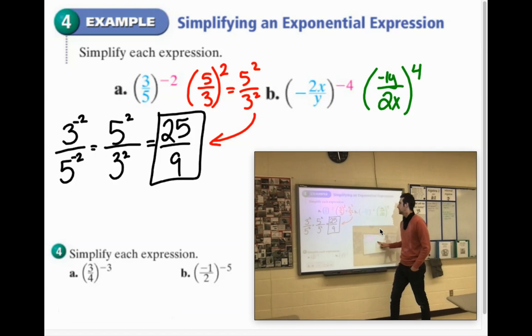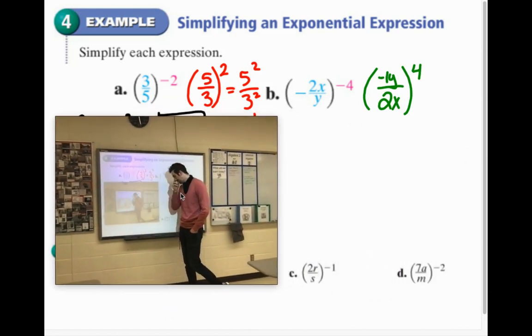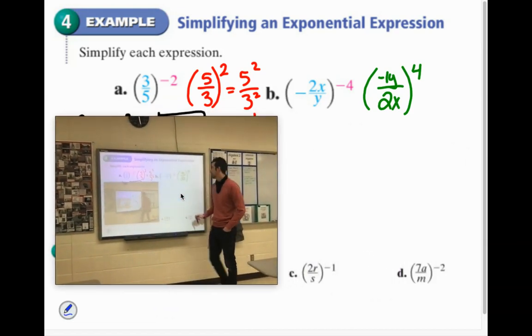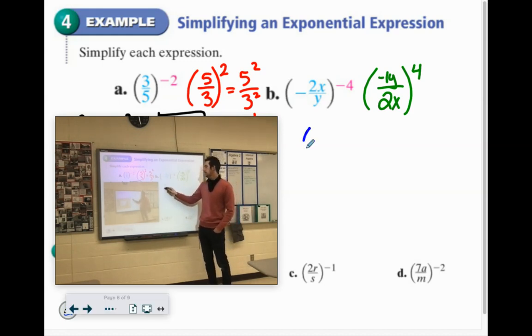Now it's raised to the positive fourth. So this one is tricky because of that negative sign. But it's smart. It shouldn't be a problem. So we're going to give the fourth power to everything. So it'll be negative 1 to the fourth, y to the fourth, 2 to the fourth, and x to the fourth.